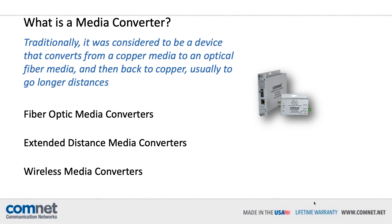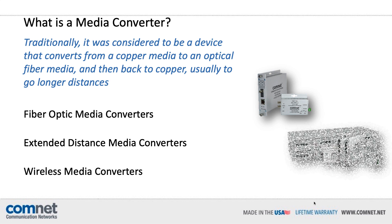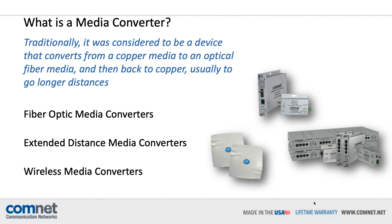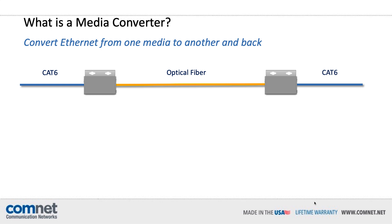The three types we are talking about today are fiber optic media converters, extended distance media converters, and wireless media converters — all transmitting an Ethernet signal. Here's a graphical example of each type. Since all of them are transmitting Ethernet, they are all converting from a standard copper CAT5 or 6 cable, which has a limitation of 100 meters or 328 feet.